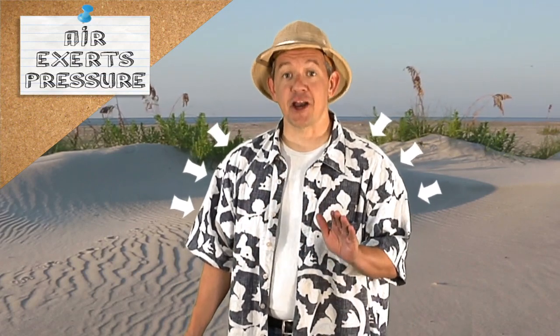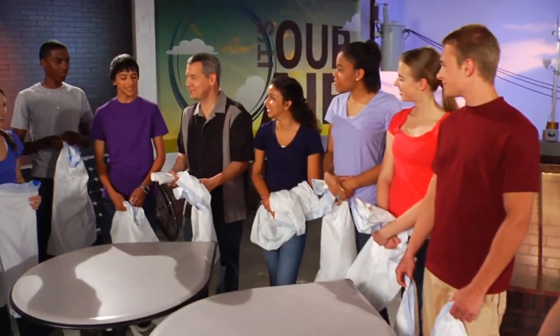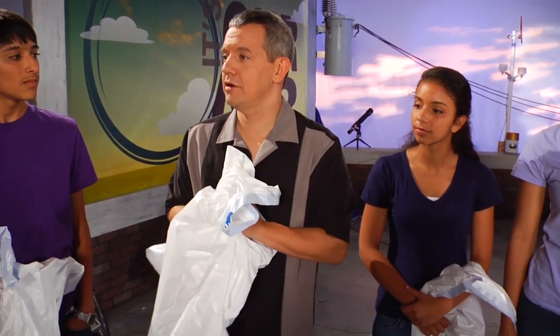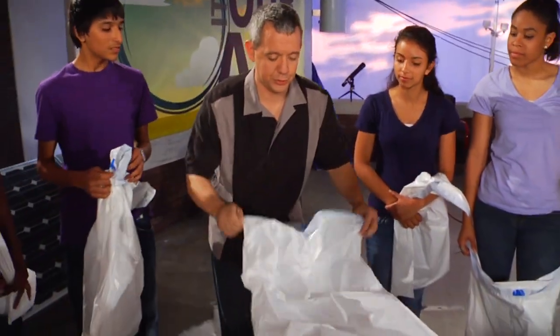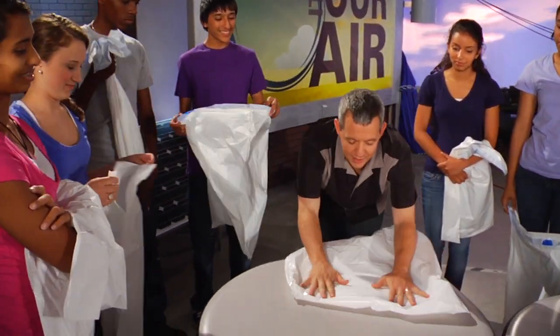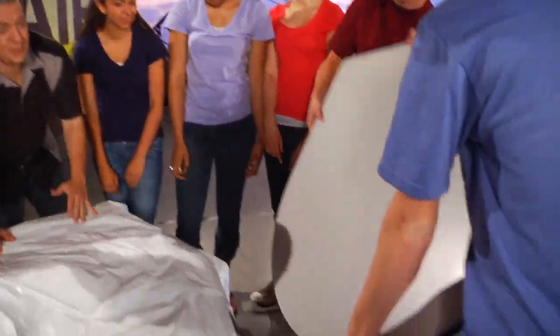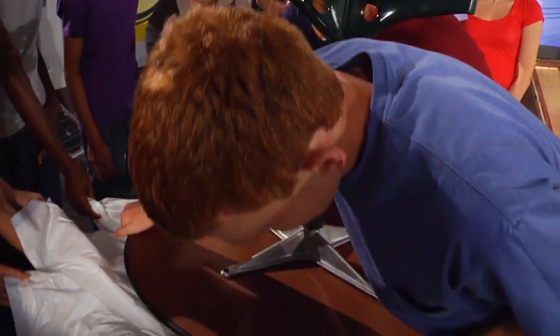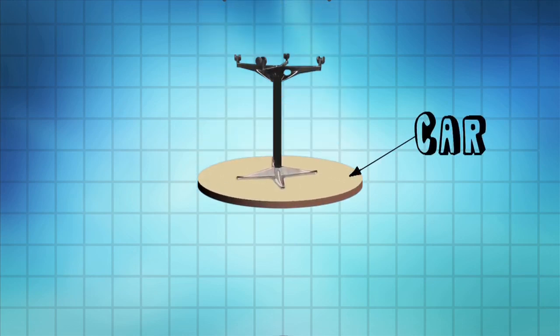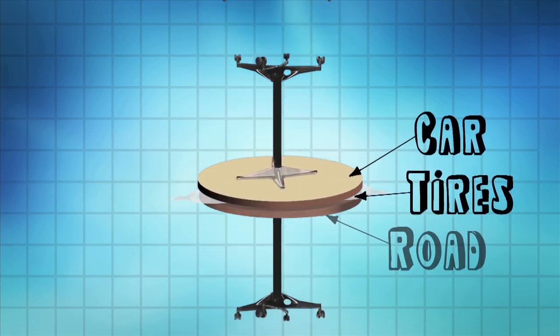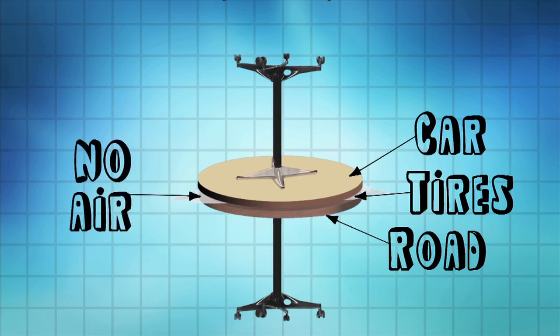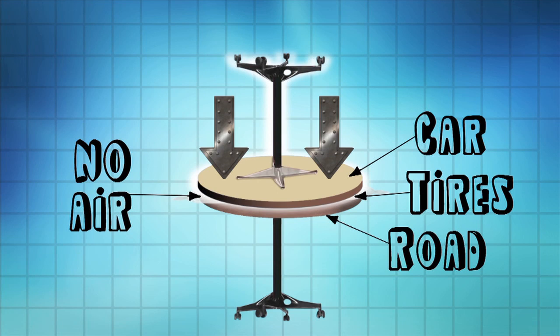Now, back to the air pressure in our tires. What do you say we go do a demonstration on air pressure and help you start visualizing some of these concepts? For this demonstration, I've given you all a garbage bag. These are going to be tires in our car, and we're going to see how they push up. Take your bag and put them flat on the table. Alex and Chris, flip that table over and put it on top. So the top table is our car, the bags are our tires, and the bottom table is the road. Right now, we've got some pretty flat tires.